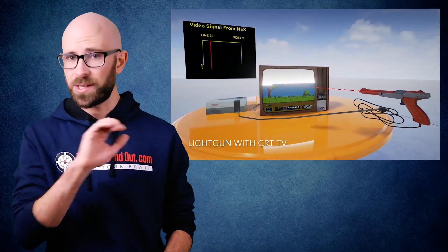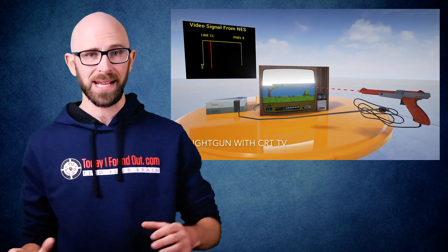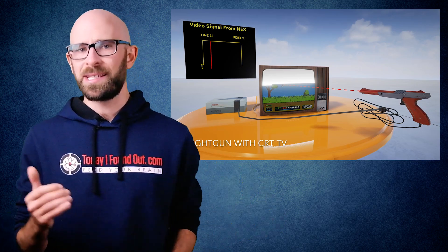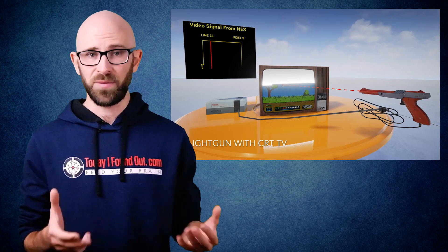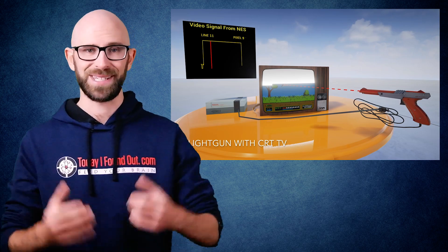The NES system did use the vertical retrace to be able to detect the start of each frame, though, but it didn't use it to detect anything about the position of the target, as in the preferred embodiment described in the patent.